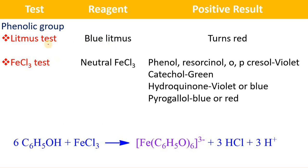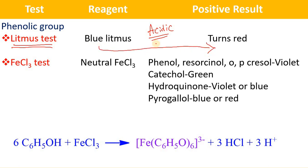Let us take the litmus test. We know that acidic compounds turn blue litmus into red litmus. Phenol is an acidic compound, so phenol turns blue litmus into red litmus.